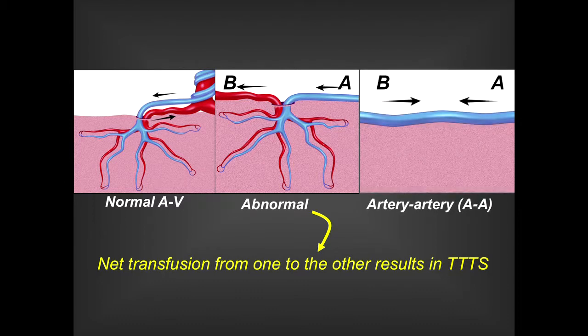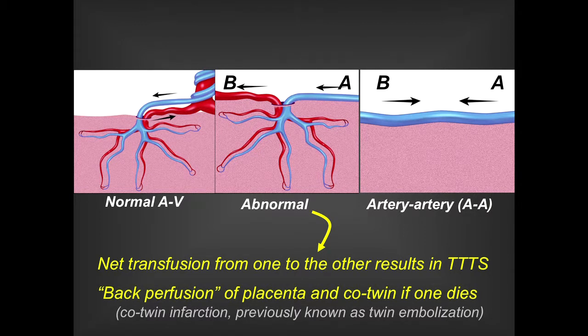In about 80% of monochorionic placentas, there are artery-to-artery anastomoses — more superficial anastomoses where the arterial supply connects one twin to the other on the surface of the placenta. This is thought to be protective in many ways. But if there is co-twin death, it can allow back-perfusion into the dead twin's circulation and placenta, causing hypoperfusion injury in the living twin — so-called co-twin infarction, previously referred to as twin embolization syndrome.